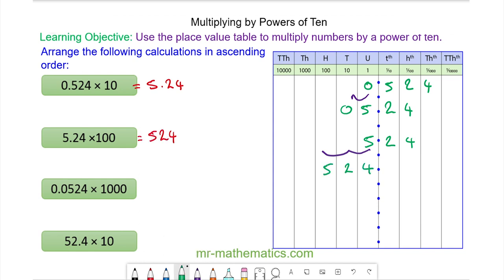For our next question, 0.0524, moving it to the left by three places because we're multiplying it by a thousand, and this becomes 52.4.